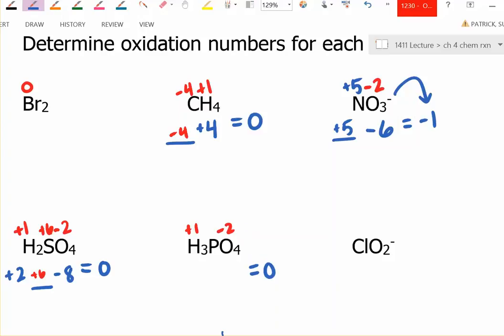I go through each one. Oxygen is minus two times four, minus eight. Phosphorus, I don't know yet. Hydrogen is plus three. So what must phosphorus be? Plus five.